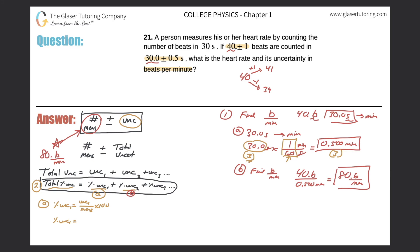Part a: the percent uncertainty of measurement one — which is beats — equals the uncertainty of measurement one divided by the measurement itself, multiplied by 100. The uncertainty of beats was 1, and the measurement was 40. So: (1 / 40) × 100 = 2.5%. However, the numerator has only one significant figure, so the answer should have no more than one sig fig. Rounding 2.5% gives us 3%.